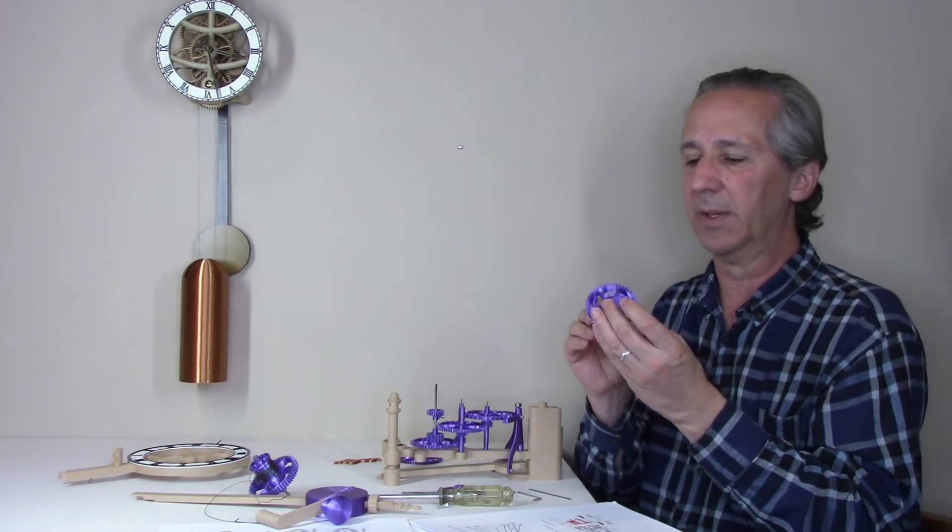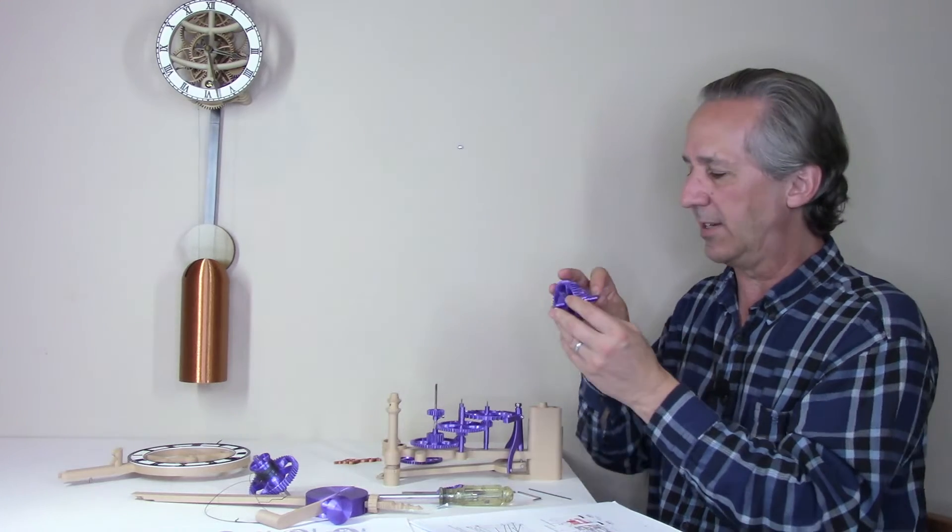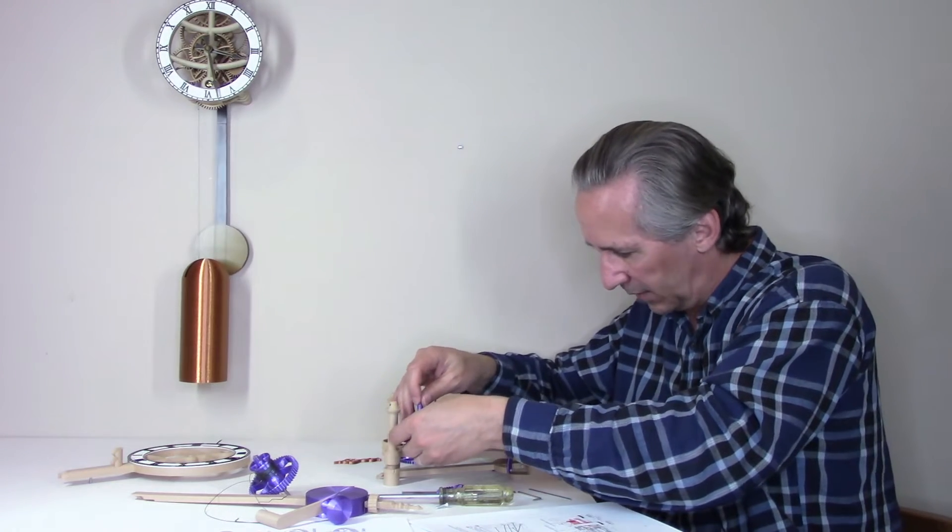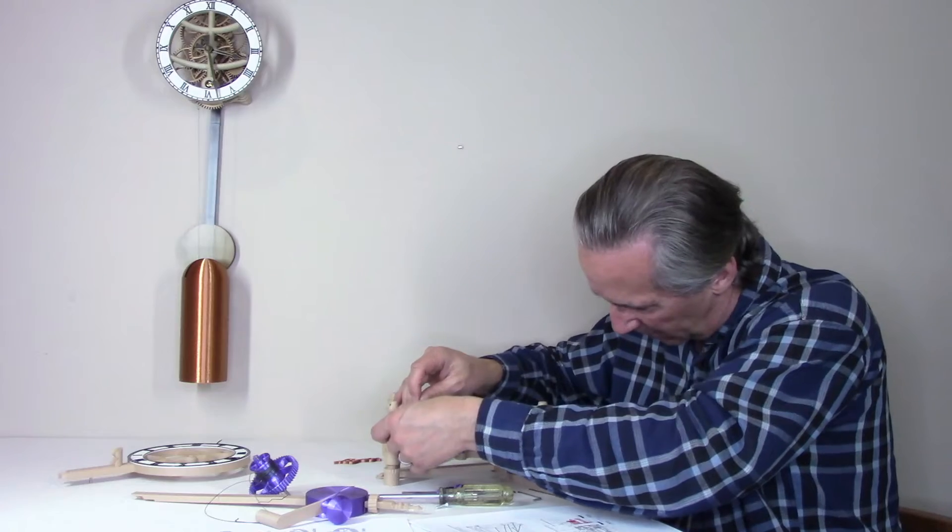The next step is adding the pre-assembled ratchet into the remaining position with the three millimeter arbor hole.